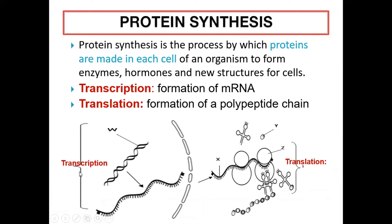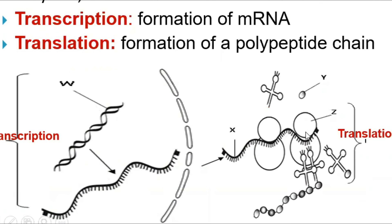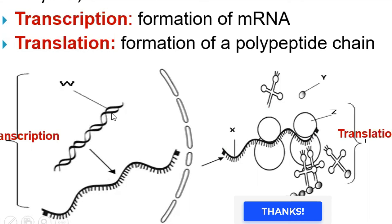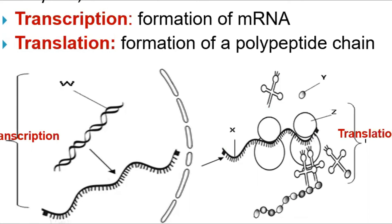To recap what you need to know: this is DNA, this is messenger RNA, this is transfer RNA — it is T-shaped, that is why it is called T. This is a polypeptide chain, and this is an amino acid. The three bases on the transfer RNA are called anticodons, the three bases on the messenger RNA are called codons, and the three bases on the DNA are also called codes.